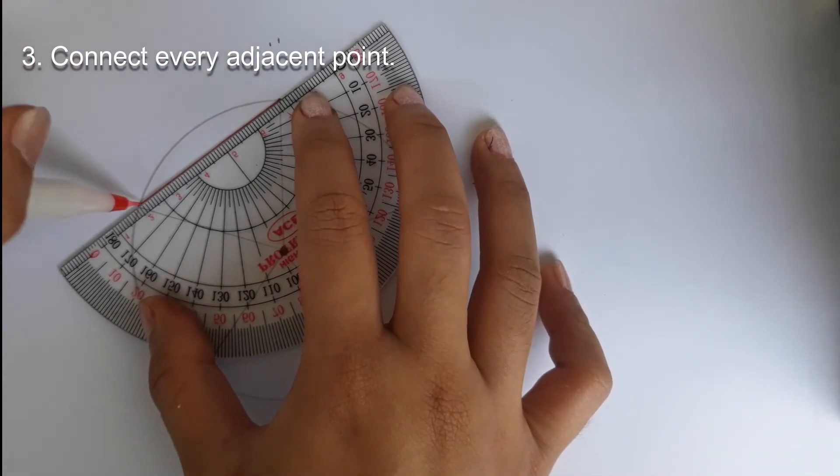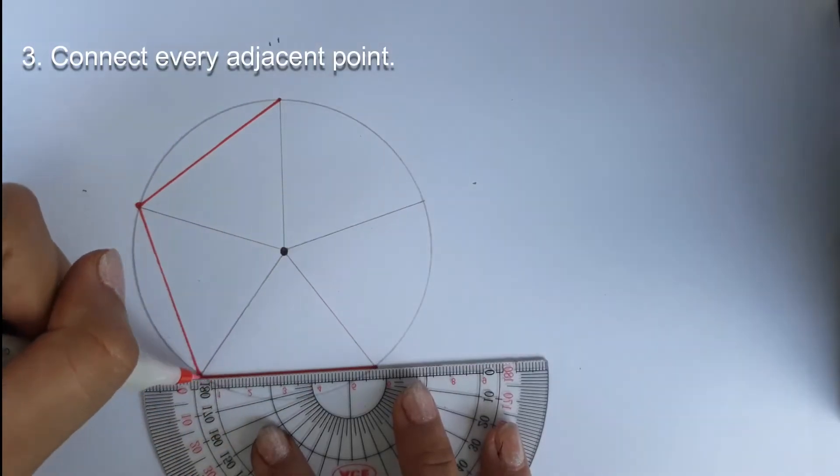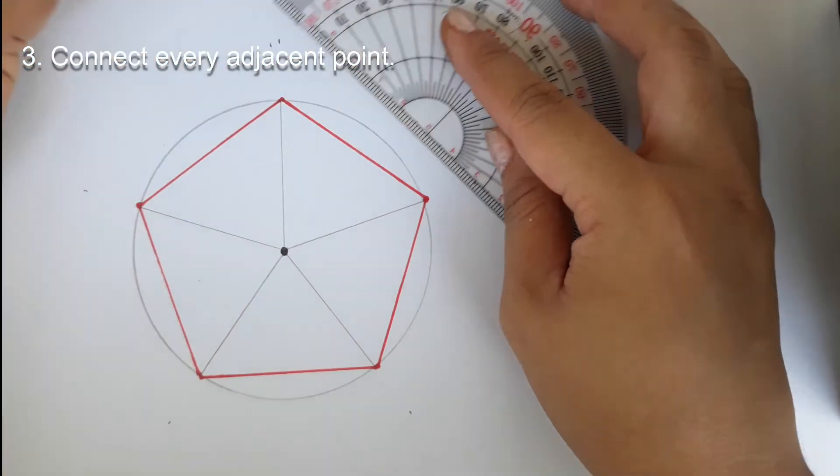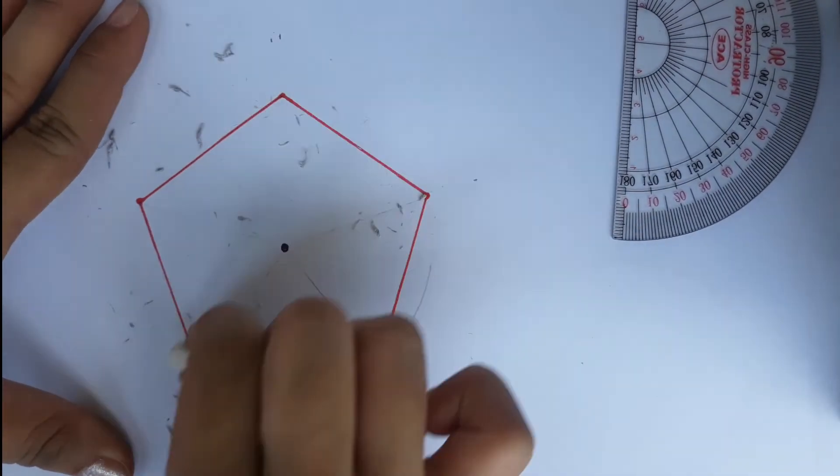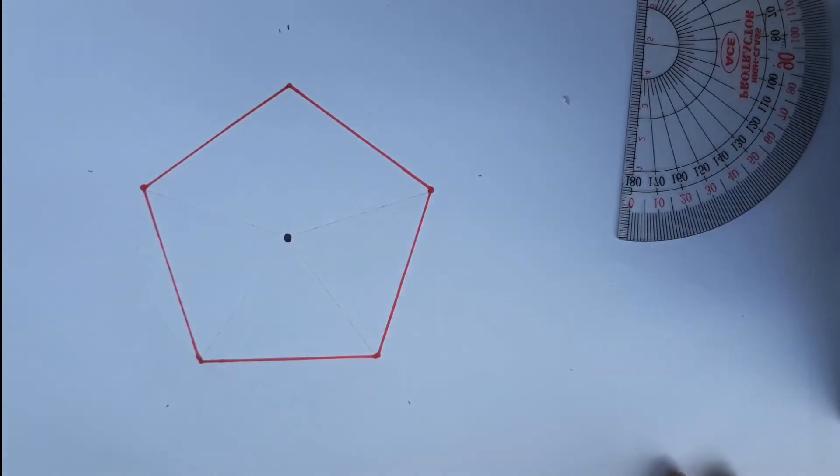Step 3. Connect every adjacent point. Now, you have a pentagon whose measure of each interior angles is 108 degrees. You may use again your protractor to counter-check.